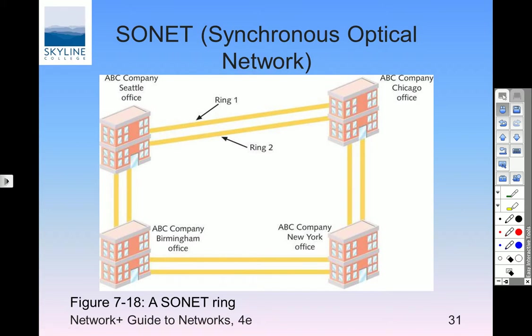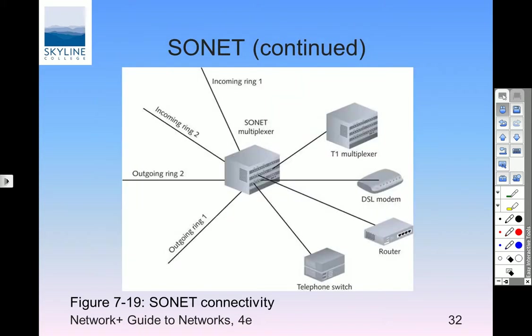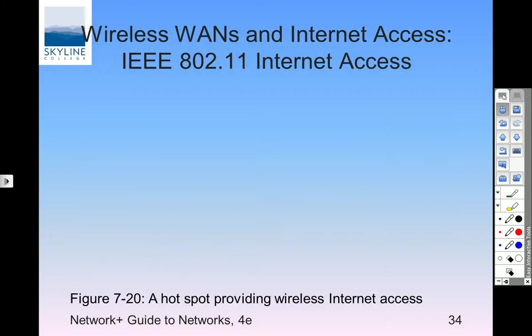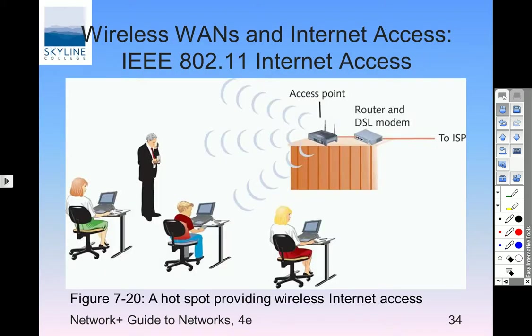SONET — synchronous optical network — is usually a high-speed telephone network. The multiplexers run at the OC standards. Looking at the speeds, you can see we go up to 39,000 megabits — that's 39 gigabits — so those are relatively fast connections.